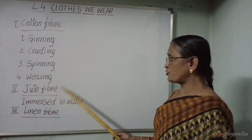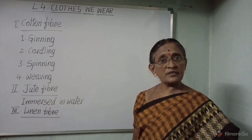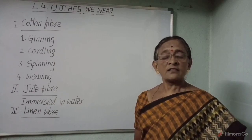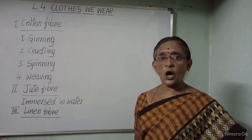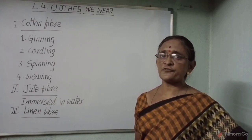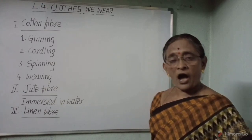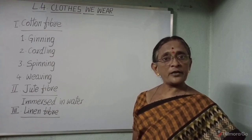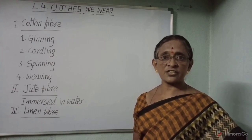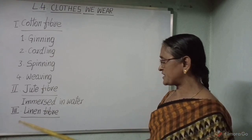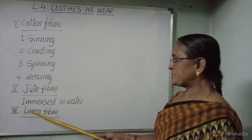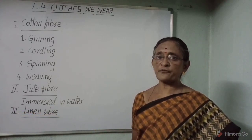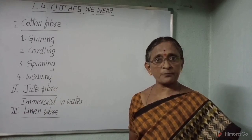Jute fiber is obtained from the stem of the jute plant. The stems of the jute plants are immersed in water for a few days, after which they become soft, and then the fiber is taken out from the stems. Linen fiber is obtained from the stem of the flax plant.